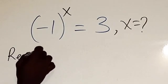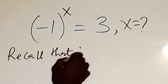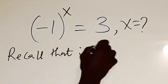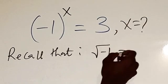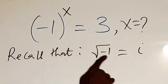Firstly, recall that the square root of minus one equals i from the complex plane. Now I need this minus one here because I have minus one here.